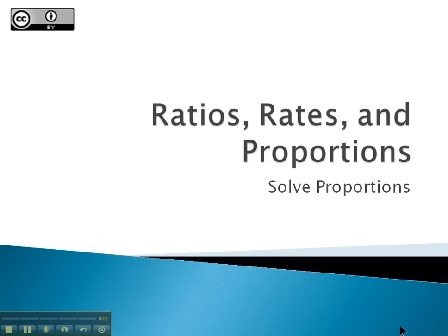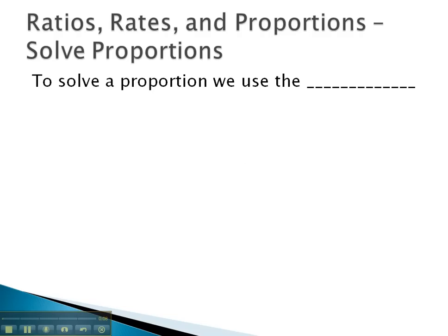In this video, we're going to take a look at how we can solve a proportion. To solve a proportion, we'll use the important property of proportions called the cross product. The cross product says that if we have a fraction, maybe a over b equal to another ratio, c over d,